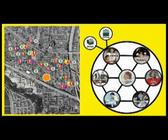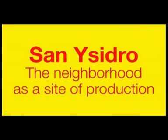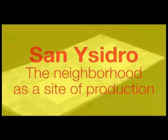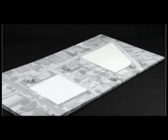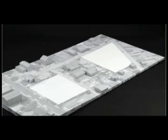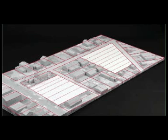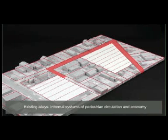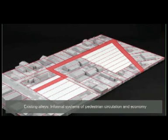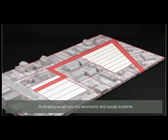At the urban scale, the neighborhood is a site of production. The project takes place on two large parcels in San Ysidro, California. The idea was to take these large parcels and divide them into small linear parcels, each having a different program. Circulation between the lots remains informal, like the original context.